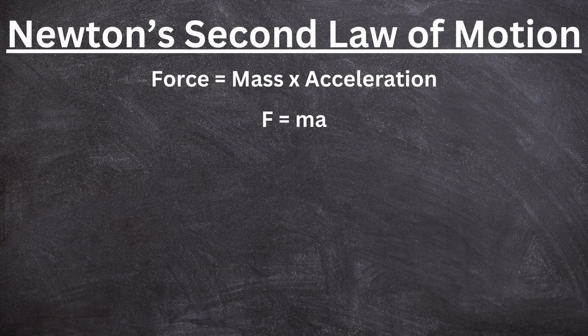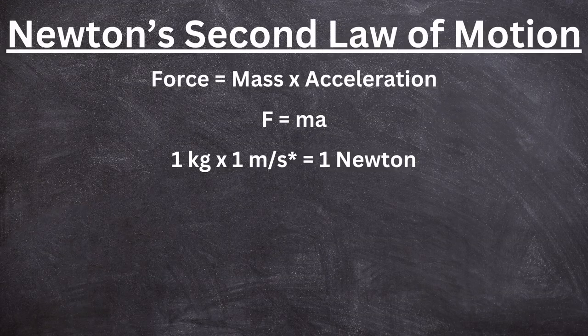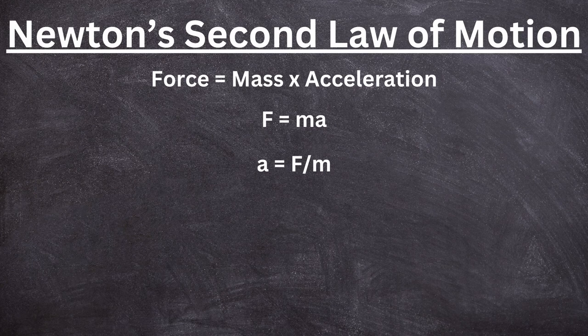Now let's talk about arguably the most important law of Newton: the second law of motion. Force is equal to mass times acceleration — F = ma. Though this equation is tiny, it has huge implications. This is the foundation of the unit of force, which is called newtons. Taking the SI unit of mass (kilograms) and acceleration (meters per second squared), one kilogram·meter per second squared equals one newton.